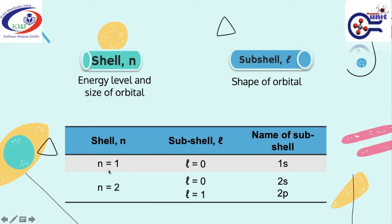When n is equal to 1, the subshell L is equal to 0. Remember that L is an integer from 0 to n-1. So when n is 1, L is 0. We know that 0 is S-orbital, so the name of the subshell is 1S, with 1 from the value of n.